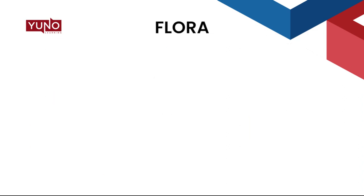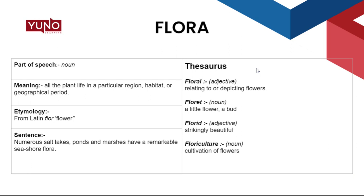Next up, we have the word 'flora.' The part of speech it hails from is noun, meaning all the plant life in a particular region, habitat, or geographical period. Etymology: from Latin 'flora,' meaning flower. Sentence: numerous salt lakes, ponds, and marshes have a remarkable diversity of flora. Some key terms derived from flora are: Floral — adjective, relating to or depicting flowers. Floret — noun, a little flower or a bud.